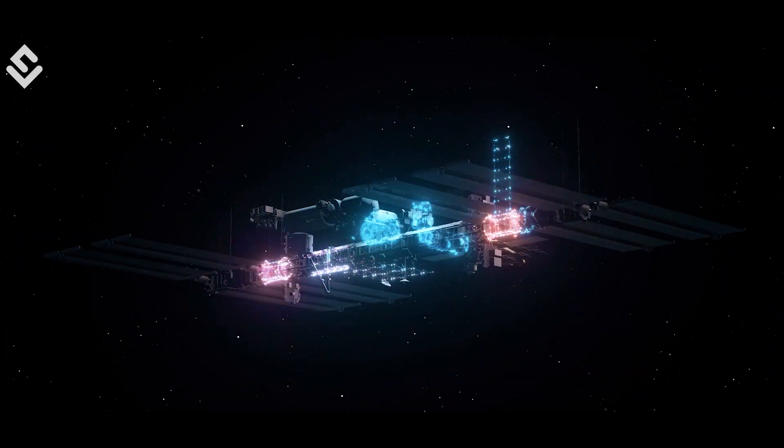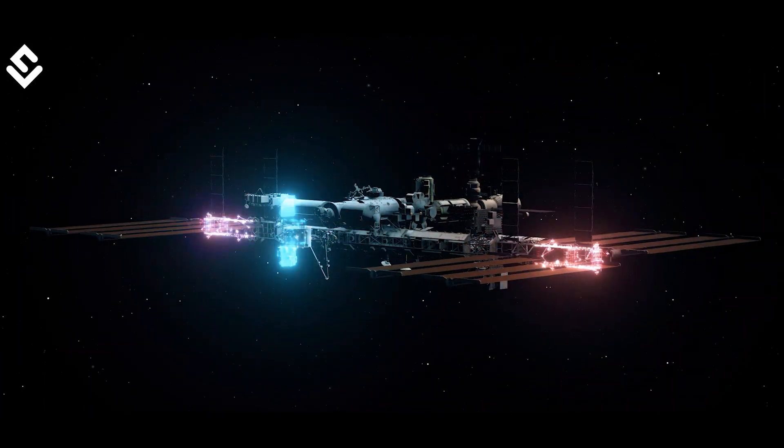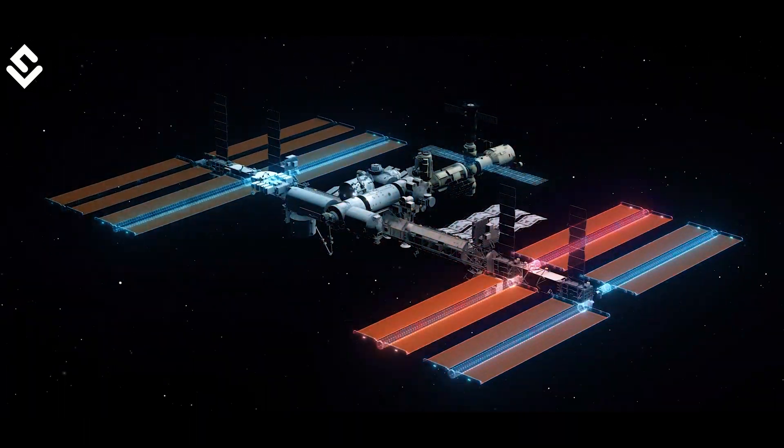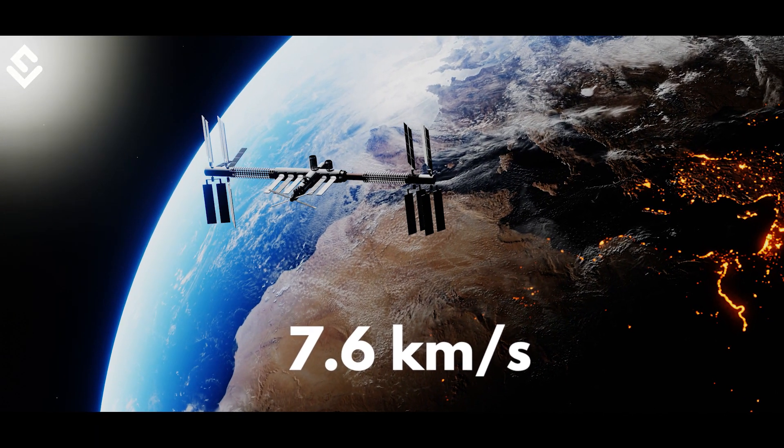The fastest vehicle made on Earth inhabited by humans is the International Space Station, moving at about 7.6 kilometers per second.